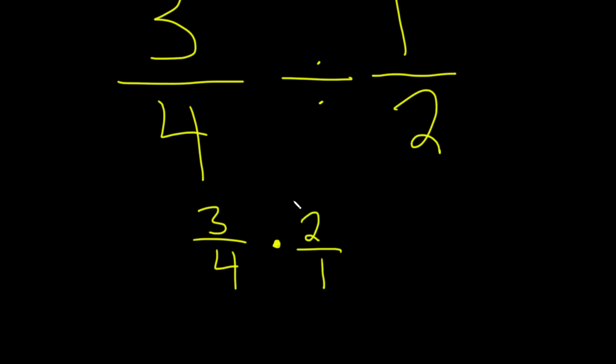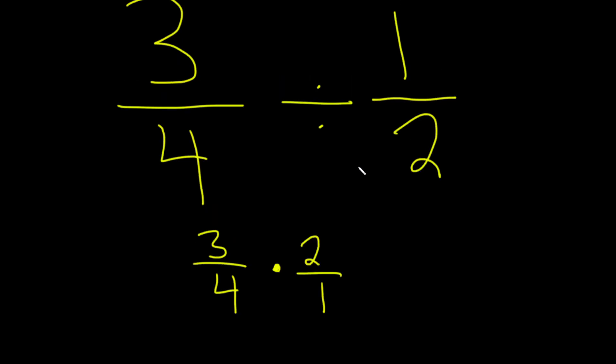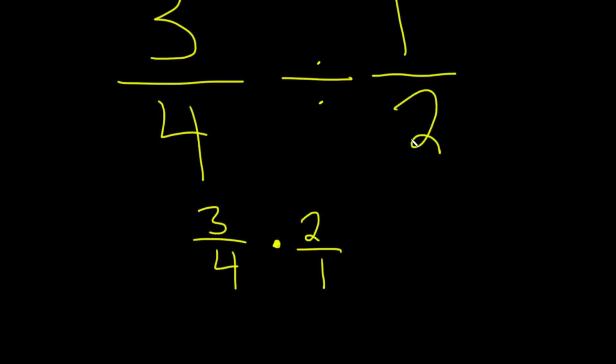So division turns into multiplication. Whenever you divide, you're multiplying by the so-called reciprocal. 2 over 1 is the reciprocal of 1 over 2 - you basically just flip the numbers.